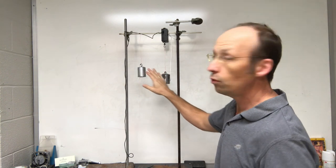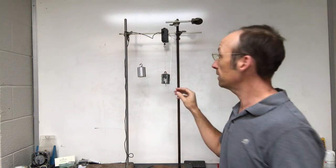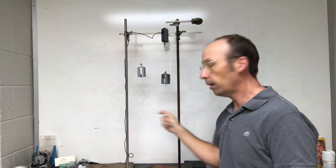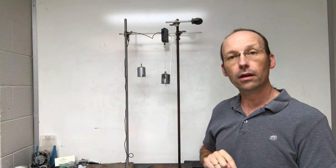So here I have two 500 gram masses and they're both supported by a string and then they have a string on the bottom. And so the question is, if I pull on the bottom string, which string will break?